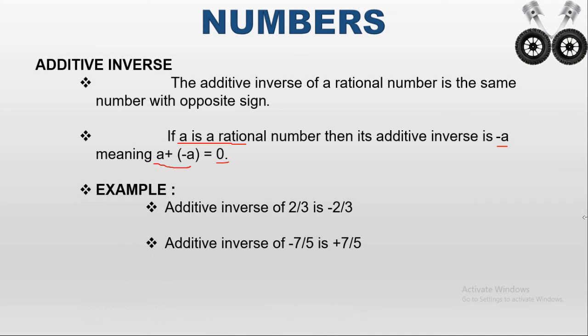For example, the additive inverse of 2/3 — since 2/3 is a positive rational number — is −2/3. And for −7/5, since it is a negative rational number, the additive inverse is the positive rational number 7/5.